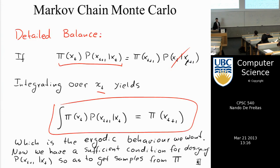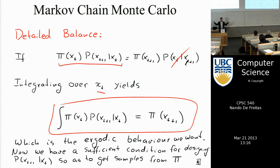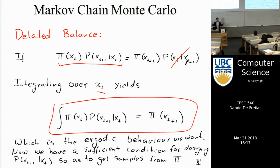One thing that is necessary — well, a sufficient condition — for this to happen is detailed balance. You could still achieve this property without detailed balance. The idea of detailed balance is to think of this as traveling in time: the probability that you're at x_t, multiplied by the probability of going from x_t to x_{t+1}, is the same as the probability of being at x_{t+1} multiplied by the probability of going back. This is a natural reversibility or balance between going to the future and coming back to the present, when the distribution of the future and the present π is the same.